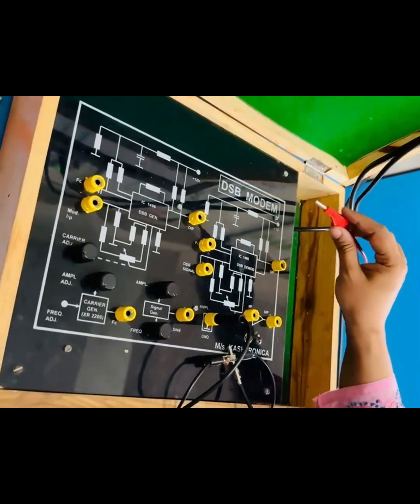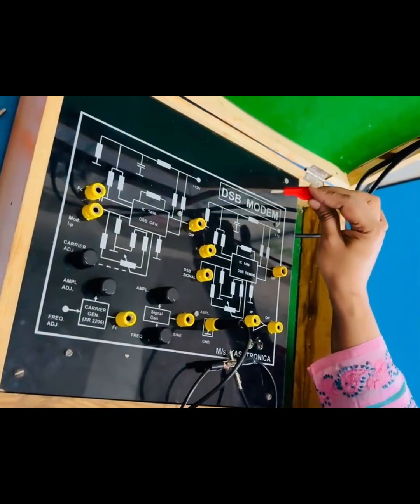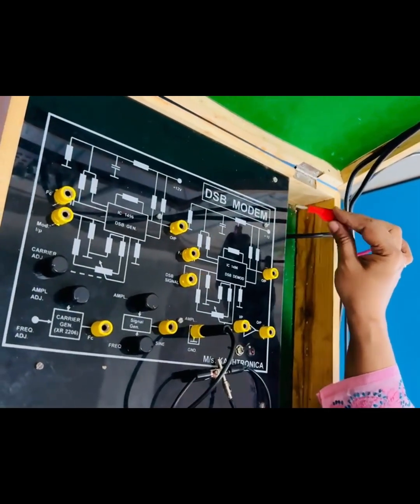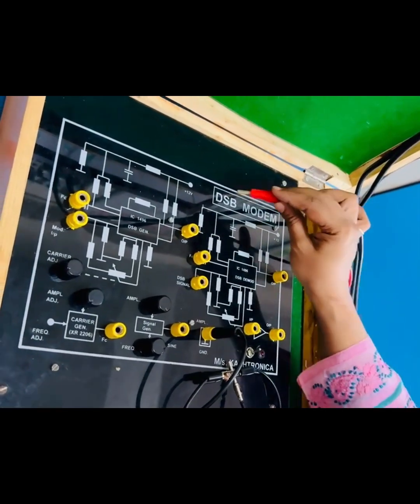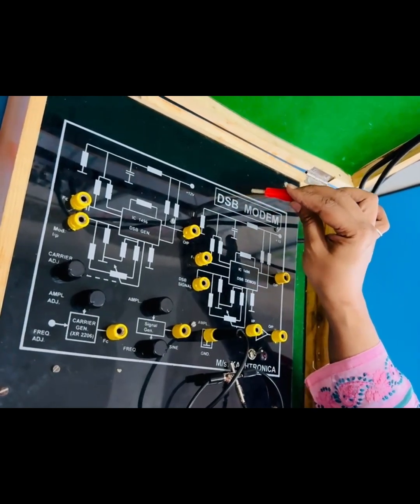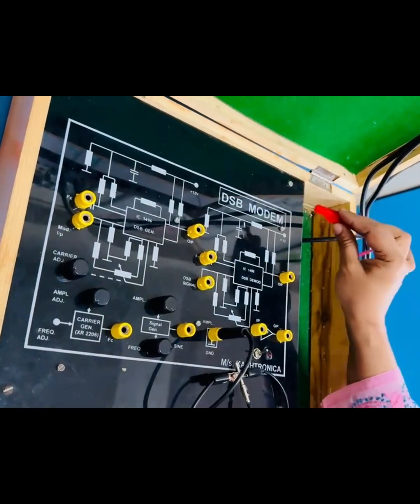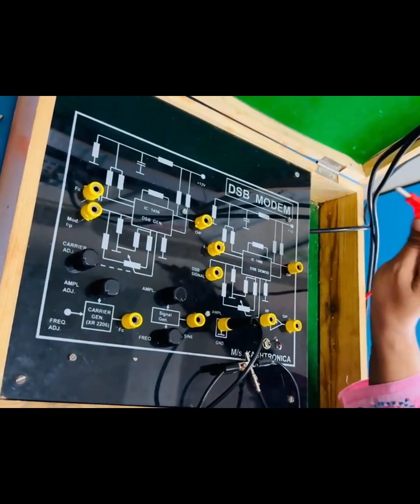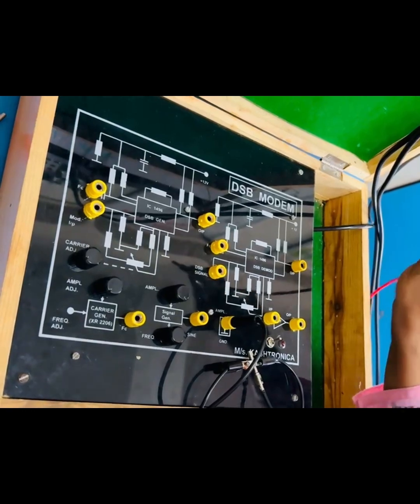I am going to explain the procedure for experiment of double sideband suppressed carrier modulation and demodulation. As the name indicates, it is a kind of amplitude modulation which has double sidebands but the carrier is suppressed to save power in the transmitted signal.